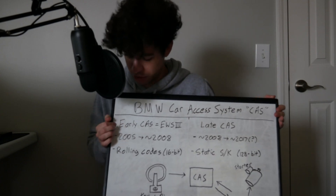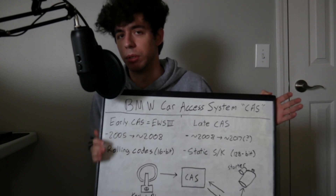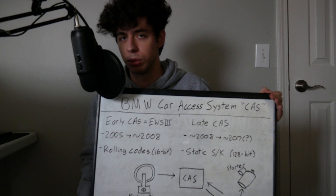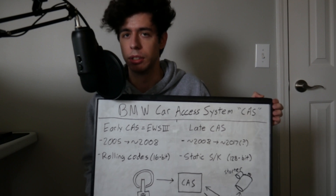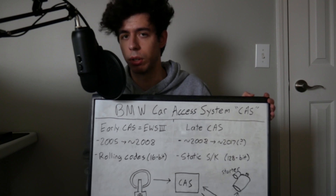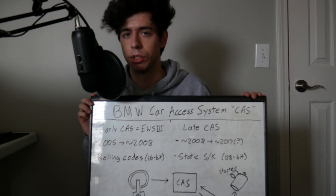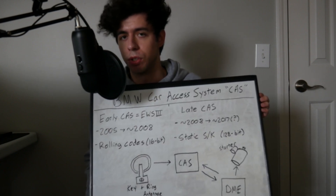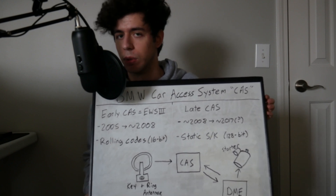The first version of CAS is essentially the same thing as EWS3. I made a video about EWS3 and will link that in the description below. The early version of CAS and EWS3 function entirely identically — the control module and the DME both have a table of codes that they access and transmit to each other whenever the car is turned on, just to verify that the codes are identical. If the values match, you get to start your car; if not, your car just won't turn over.